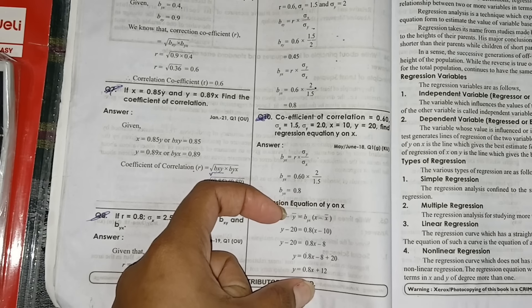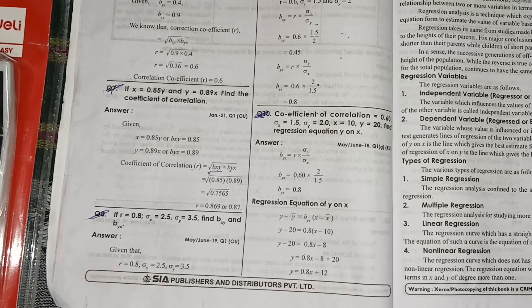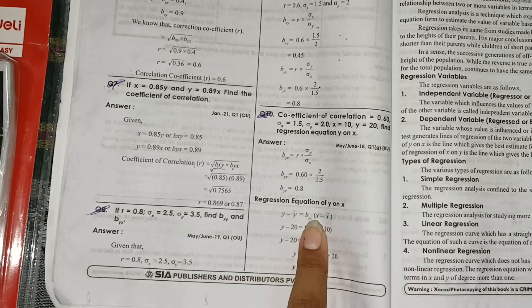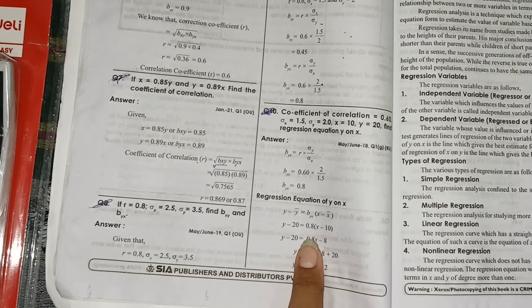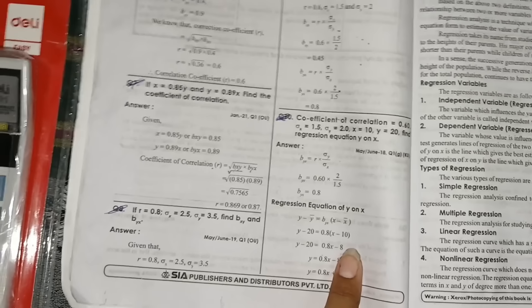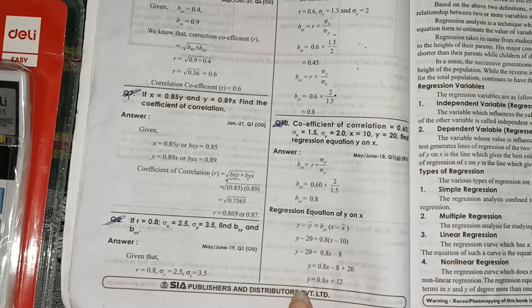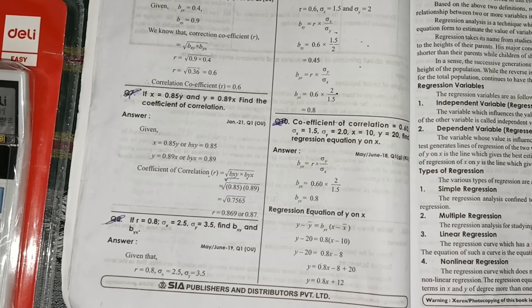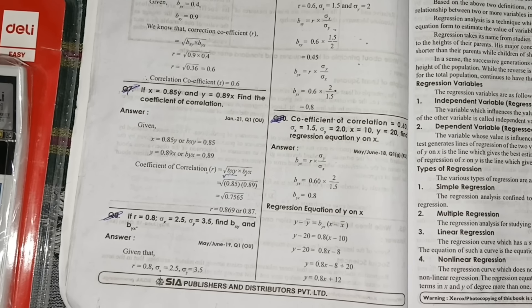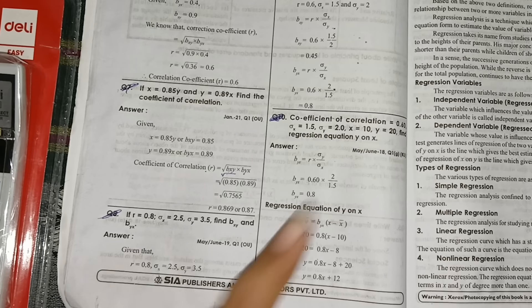x value 10, y value 20 also they have given. After finding byx we need to calculate x on y. So x on y, how we will calculate? byx we have got 0.8. x bar is equal to 10, y bar is equal to 20, just you need to substitute it. If you have already watched 12 marks regression problem, you can do this problem.